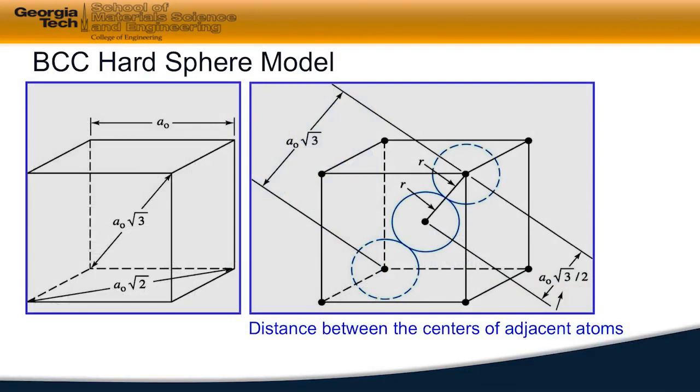For the BCC cubic hard sphere to develop, the spheres must touch along the body diagonal of the cube, which permits us to write a relationship between the dimensions of the cube and the radius of the sphere.